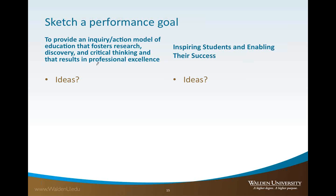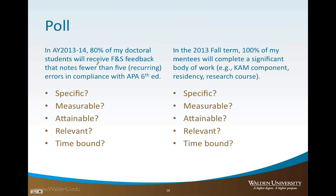Let's do a brief poll. We have two sketched performance objectives to look at. The first one: in the academic year 2013-14, 80% of my doctoral students will receive form and style feedback that notes fewer than five recurring errors in compliance with APA 6th edition. We'll assess which SMART dimensions — specific, measurable, attainable, relevant, and time-bound — have been met.